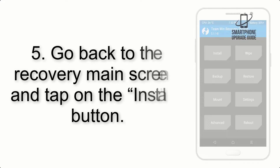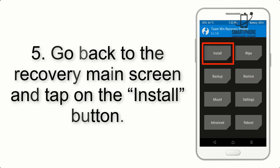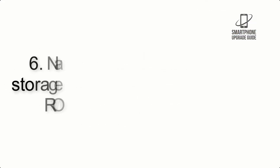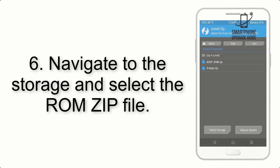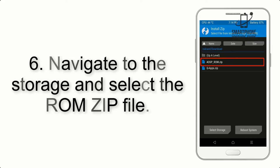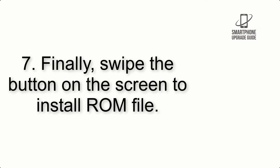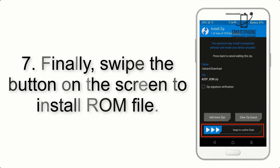Step 4: Swipe the button to wipe the device. Step 5: Go back to the recovery main screen and tap on the Install button. Step 6: Navigate to the storage and select the ROM zip file.